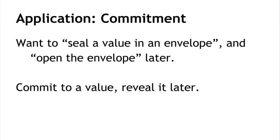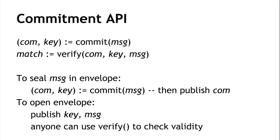Now let's look at an application of the hiding property: commitments. This is the digital analogy of sealing a value in an envelope on the table — you've committed to what's in the envelope but haven't revealed it; later you can open it. The commitment API has two operations: commit to a message, returning a commitment and a key; and verify, which given a commitment, key, and message, returns true or false. Think of the commitment as the envelope and the key as the secret for unlocking it.